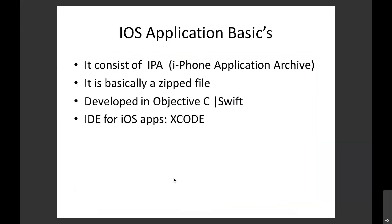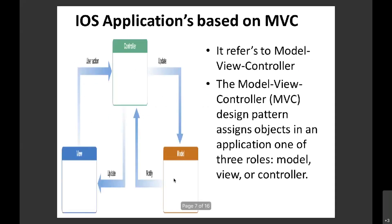For iOS applications, similar to APK files for Android, iOS uses IPA files. IPA stands for iPhone Application Archive — it's essentially a ZIP file. iOS applications are developed in Objective-C and Swift. The integrated development environment used is Xcode, similar to Android Studio for Android. Xcode is most commonly used by Apple developers for building iOS applications.